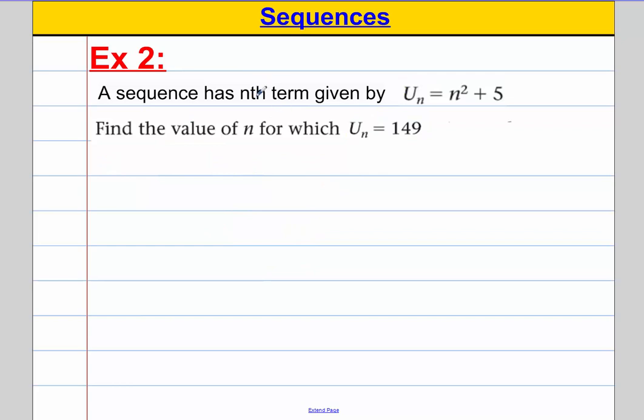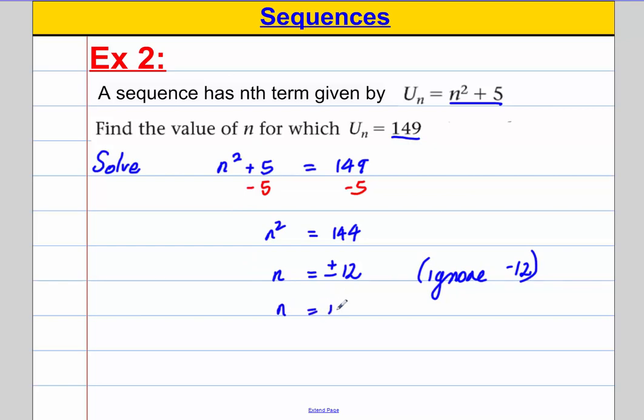Next example, similar example. A sequence has the nth term given by this. Find the value of n for which the nth term is 149. We're going to solve n squared add 5 is equal to 149. I'm going to subtract 5 from both sides, and I get that n squared is therefore equal to 144. And I'm going to take the square root of both sides and I get n is either positive or negative 12. Now, n has to be positive when you're talking about the nth term of a sequence because you can't have the u minus fifth term of a sequence, for example. So, we're going to ignore negative 12 and state that n is therefore equal to 12 and we're done.